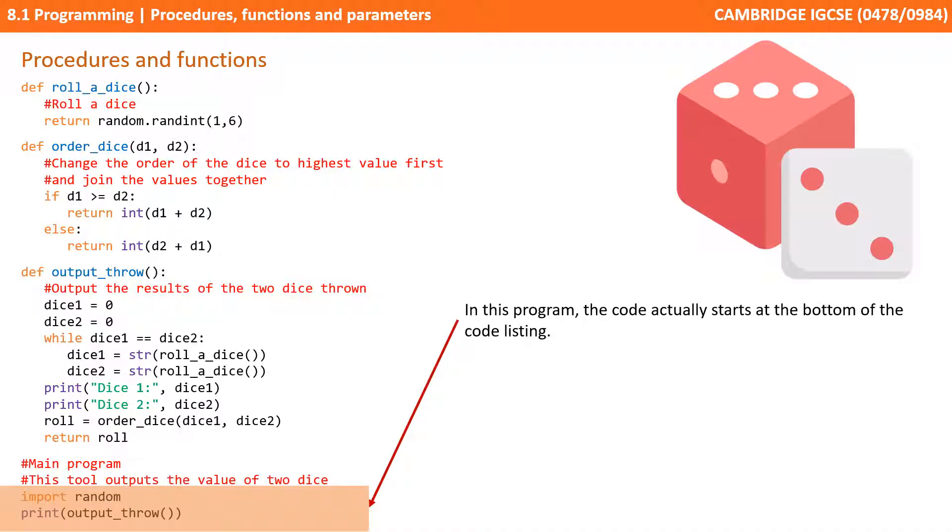In this example game in Python the code actually starts at the bottom of the code listing. That's because everything above it is either a procedure or a function.